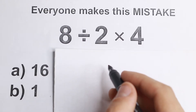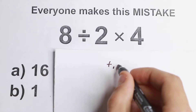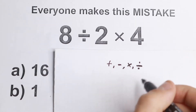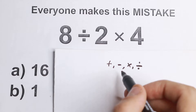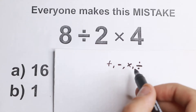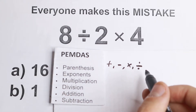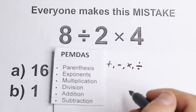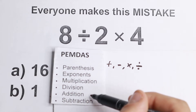A mathematical operation is a thing like addition, subtraction, multiplication, or division. We need to know about these operations to solve this problem. The main popular order used by every internet resource is the PEMDAS order: Parentheses, Exponents, Multiplication, Division, Addition, and Subtraction.